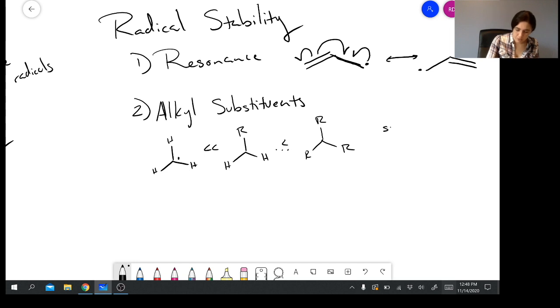Same trend, same reason. Radicals and cations both are stabilized by resonance and hyperconjugation or electron density donated from adjacent sigma bonds.